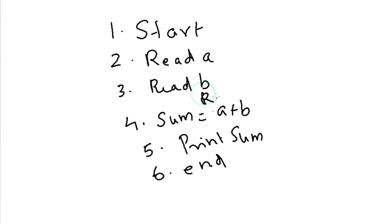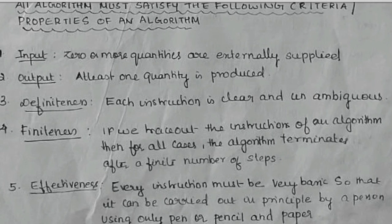Suppose I am going to add one more step: Read C. I haven't used C in my entire algorithm. Anywhere I haven't used. Then why to write this read C? This unnecessary statement should be avoided here. Your algorithm should be effective.